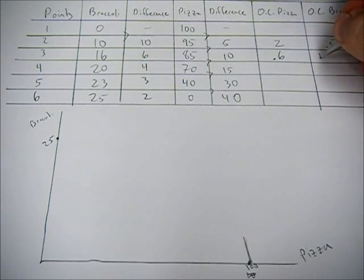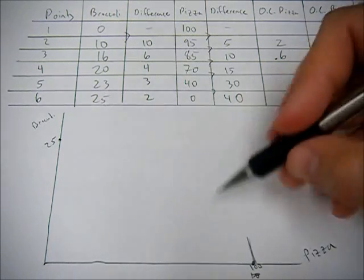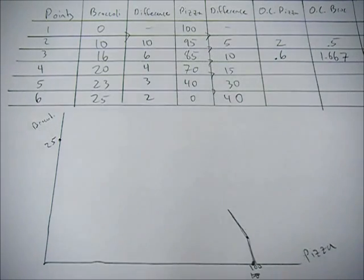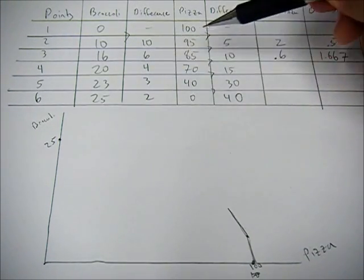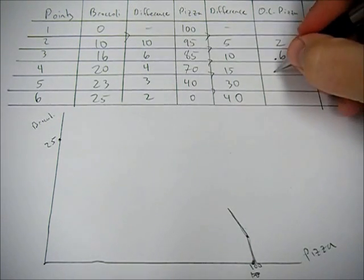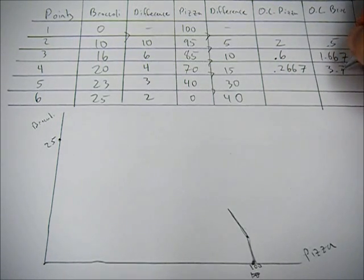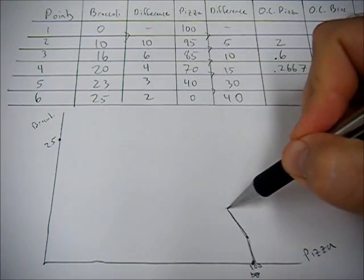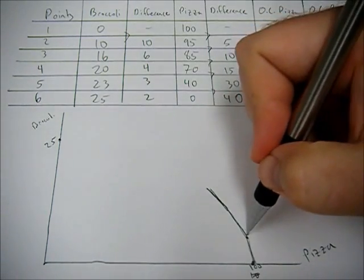That's our opportunity cost for a pizza. The inverse of that, 10 over 6, is 1.667. That gives us the opportunity cost of broccoli. So our slope changes from 2 to 0.6. We get to the next term, difference of 4, that's how much broccoli we're getting, we're giving up 15 pizza, so that's 0.2667.